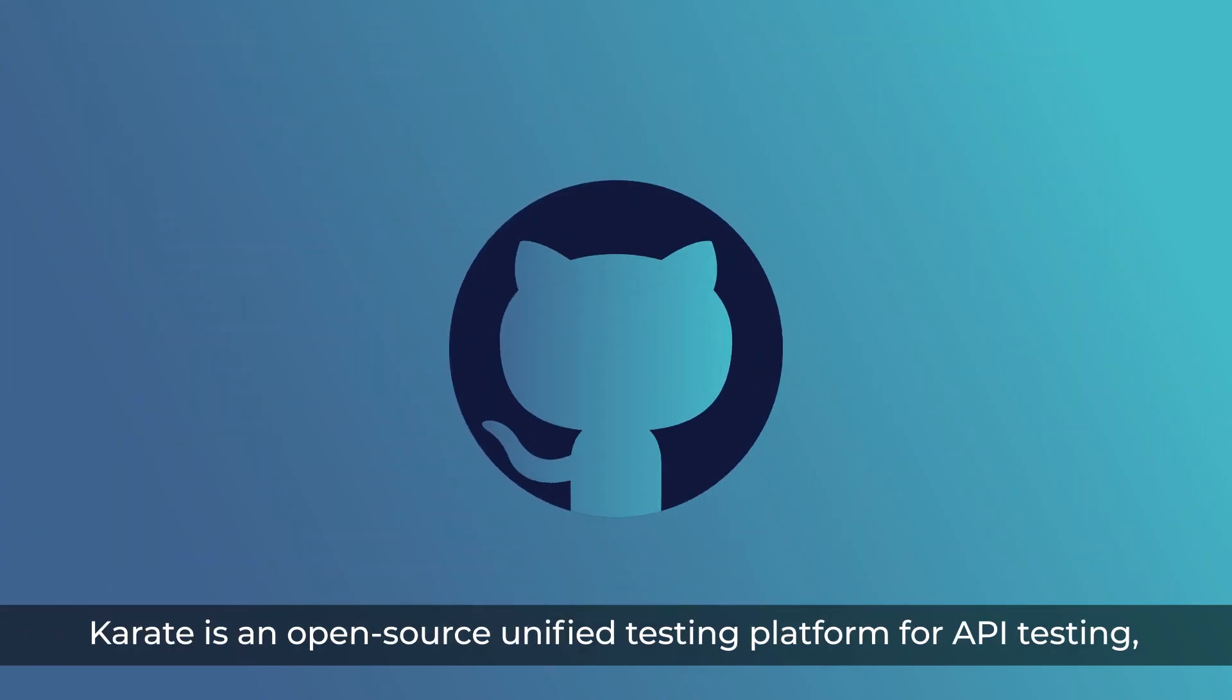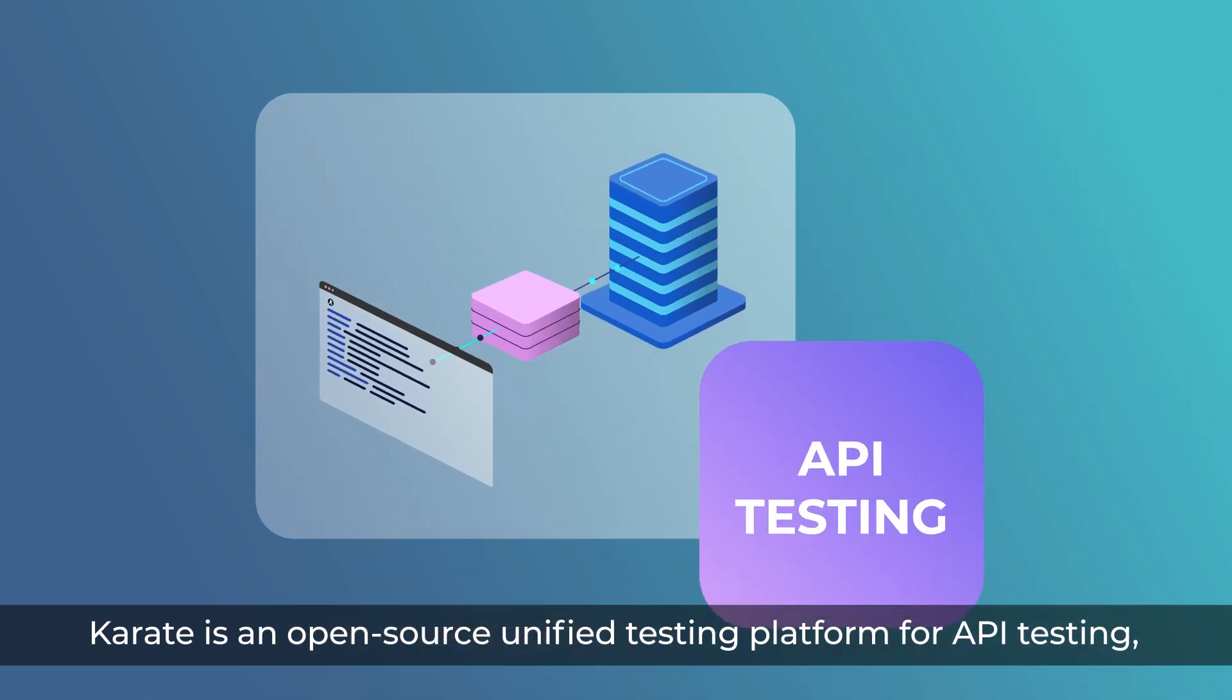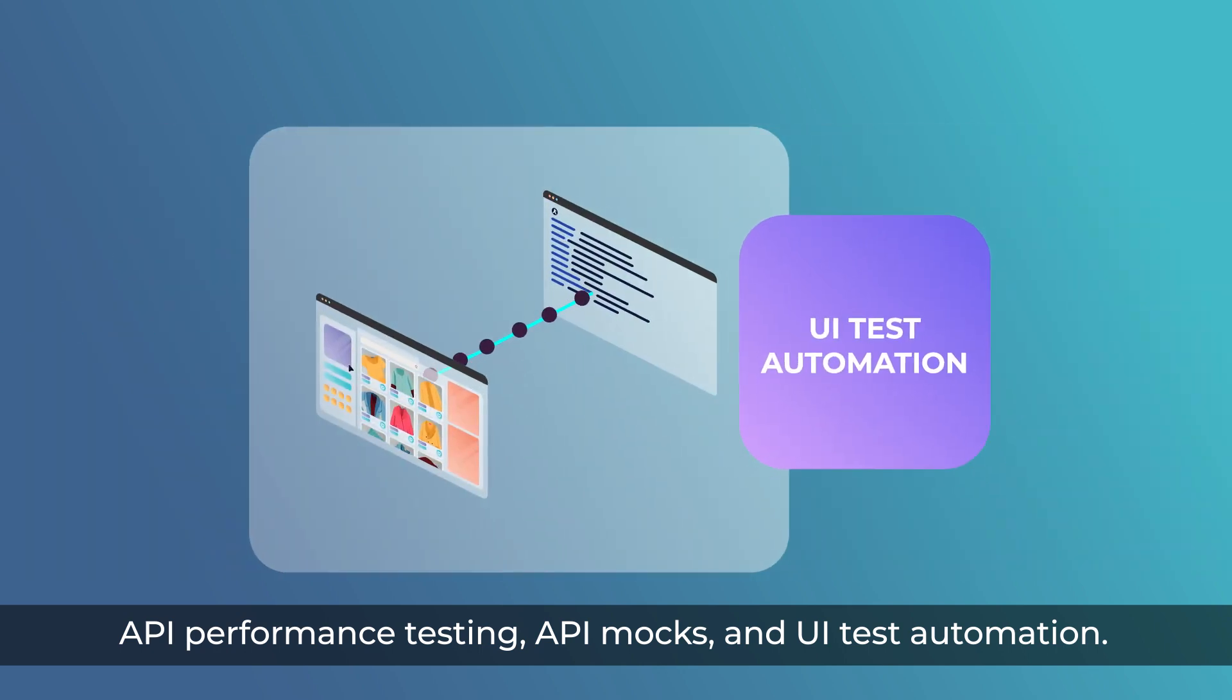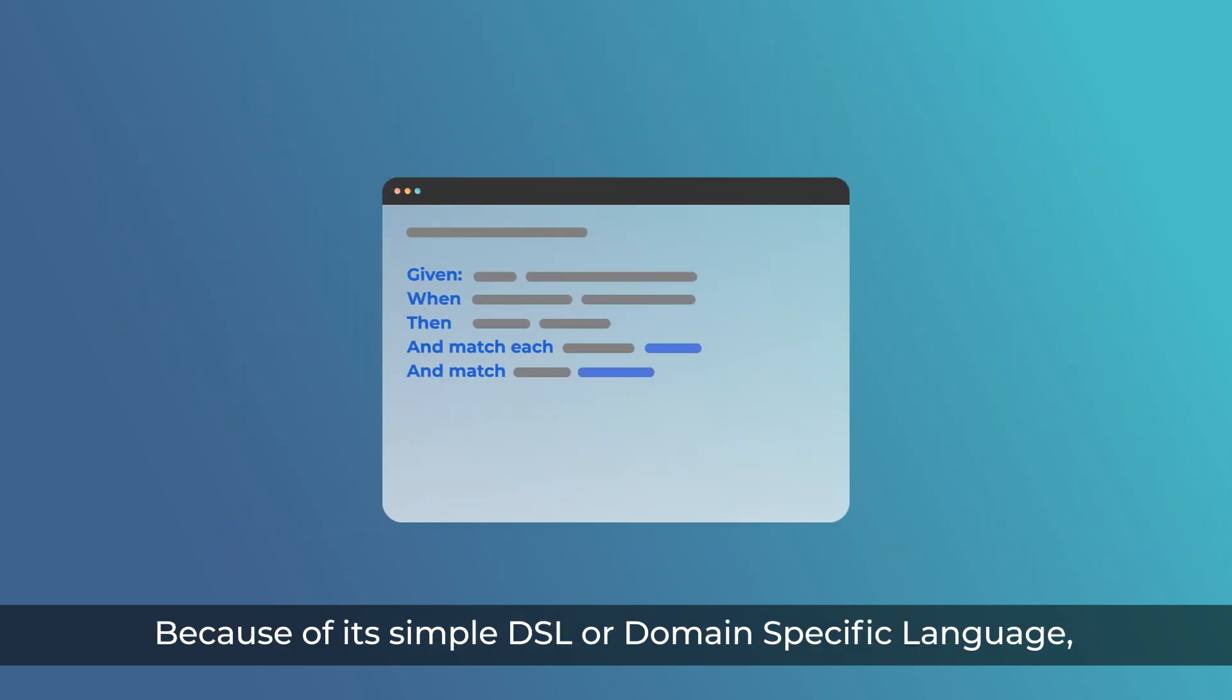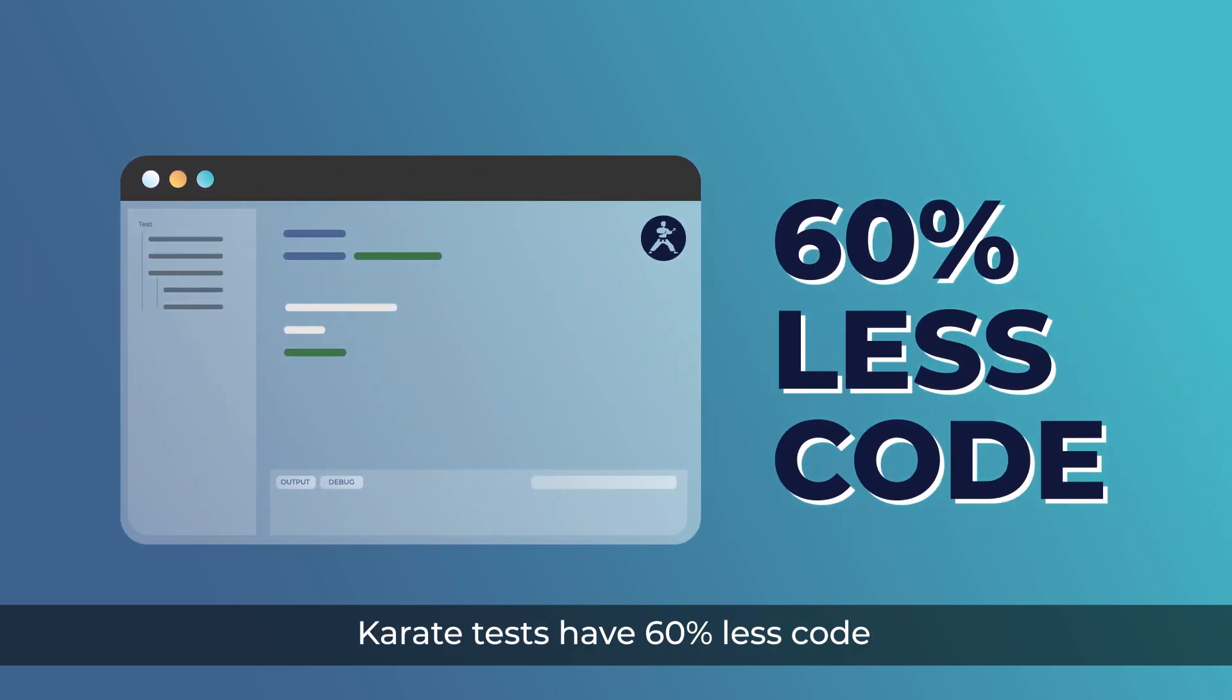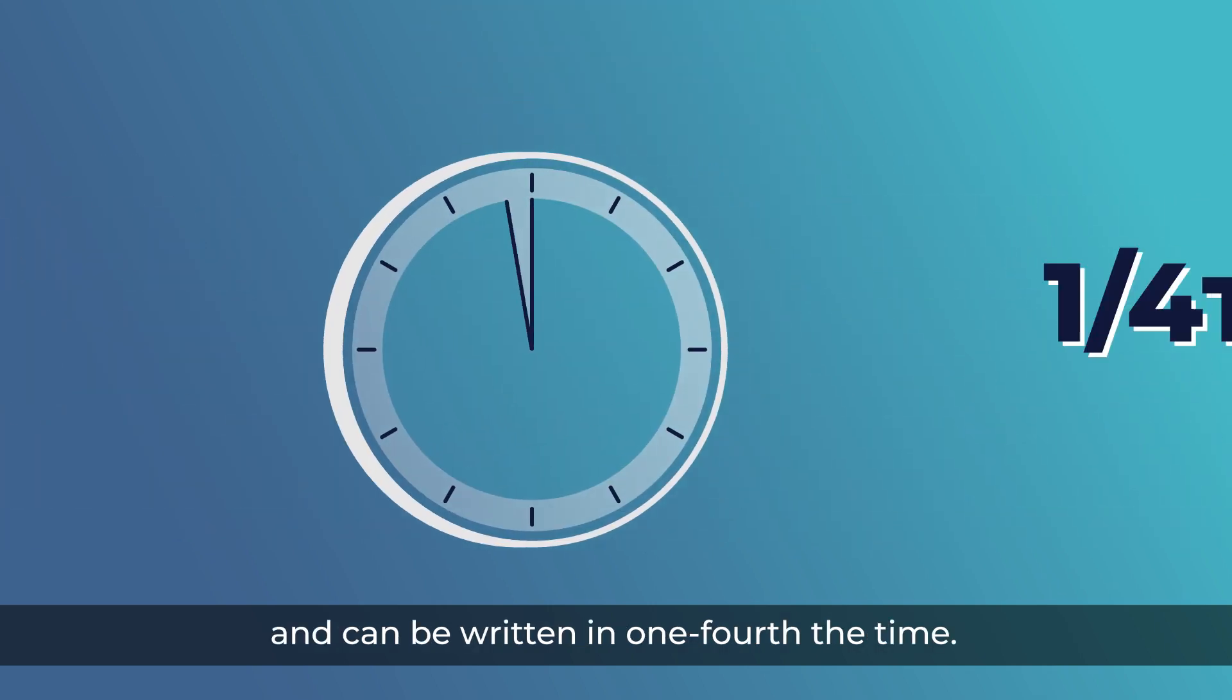Karate is an open-source unified testing platform for API testing, API performance testing, API mocks and UI test automation. Because of its simple DSL or domain-specific language, Karate tests have 60% less code and can be written in one-fourth the time.